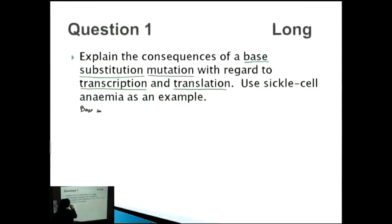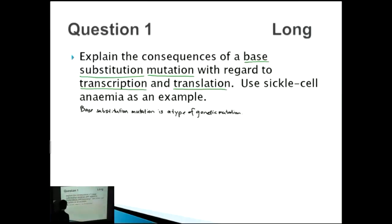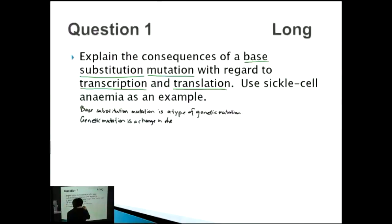A base substitution mutation is a type of genetic mutation — one of many types, including frame shift mutations and insertions. A genetic mutation is a change in the base sequence of a gene.